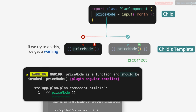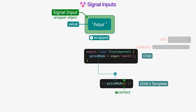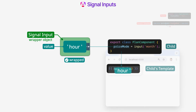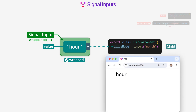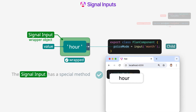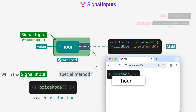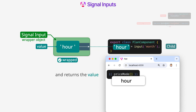If we try to display it directly, we get a warning. We call this property as a function, which returns the value. The signal input has a special method to get the value. When the signal input is called as a function, this special method is called automatically and returns the value.